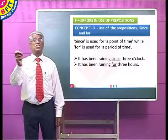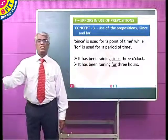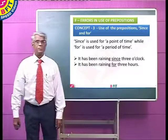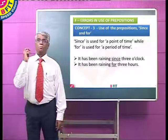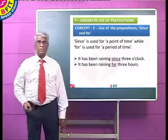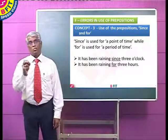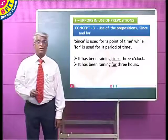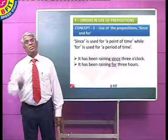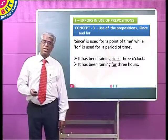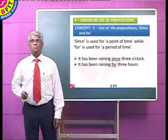The next one is 'since' and 'for.' Many of us get confused about when to use each. 'Since' is used when you talk of a point of time: it has been raining since 3 o'clock. '3 o'clock' is a point of time. When you talk about a period of time: it has been raining for 3 hours. '3 hours' is a period of time, therefore we use 'for.'